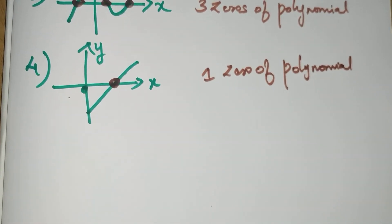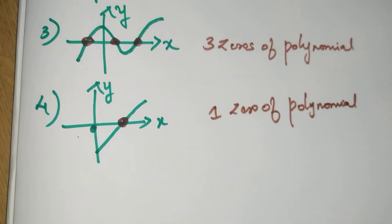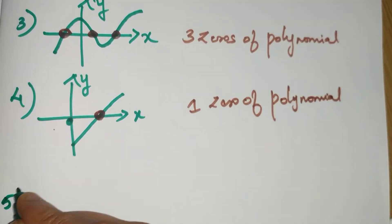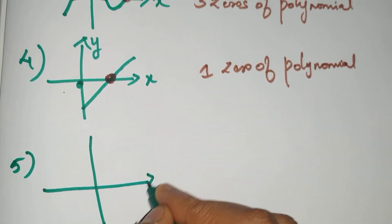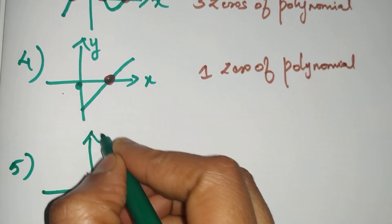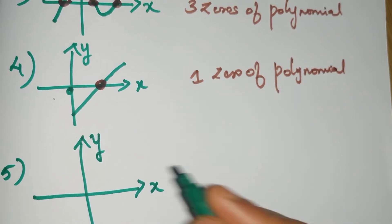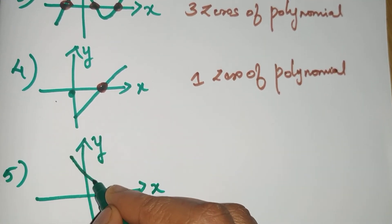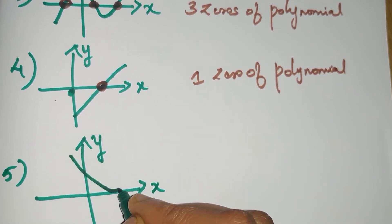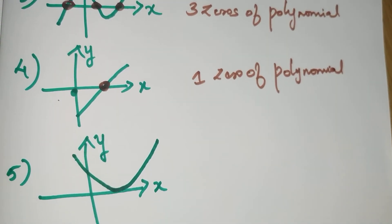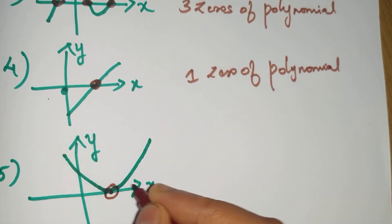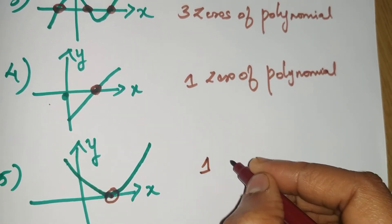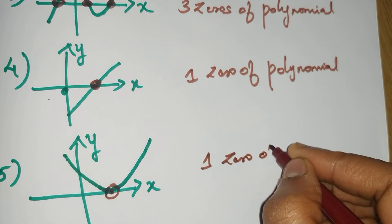Let us take another two examples. Fifth one, again x and y axis we have, and we have a curve which touches the x-axis in this form. It is like a parabolic curve again and you can see this is the only point which is touching the x-axis. So it is again one zero of polynomial.